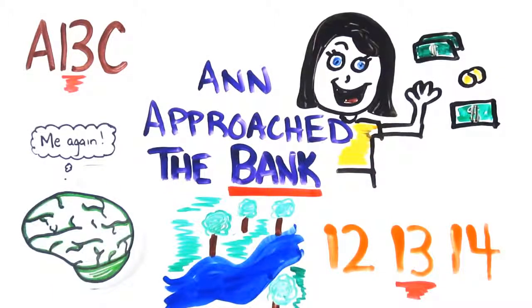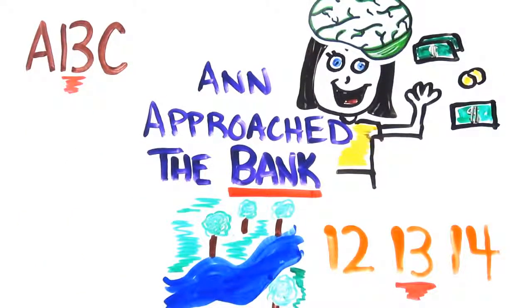Without an explicit context, System 1 quickly generates one based on previous experience. In this case, you've likely visited more banks than rivers and so the context is resolved accordingly. This ties into a concept called priming.